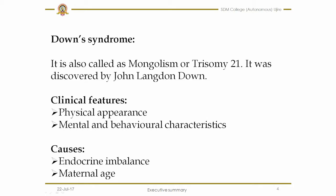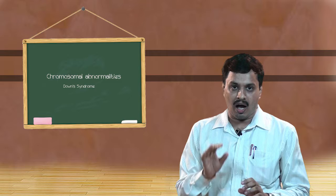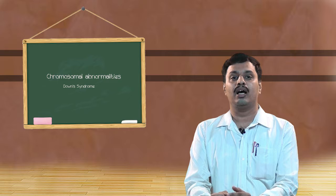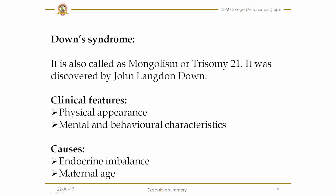Now let us go to the clinical features of Down syndrome. Regarding physical appearance, these individuals will have a flattened nose, upturned nose, almond-shaped eyes, flat head, and round head. They are of short stature and have a chubby kind of build. Regarding mental and behavioral characteristics, individuals will have an IQ range starting from mild mental retardation to severe mental retardation, around 65 to 70. Regarding behavioral patterns, these individuals are very friendly and very social.